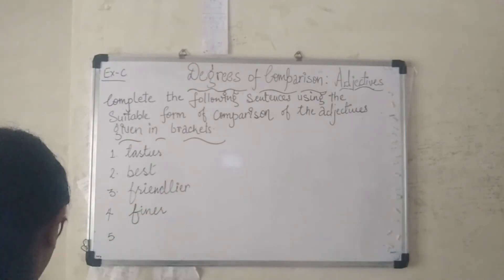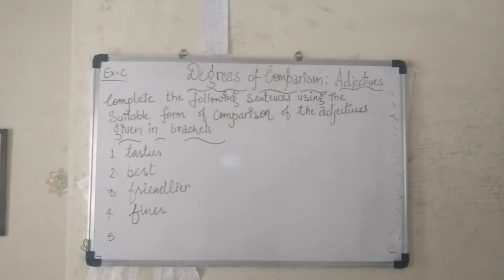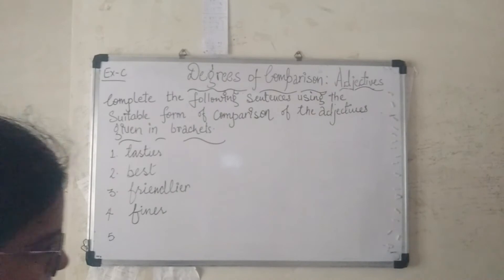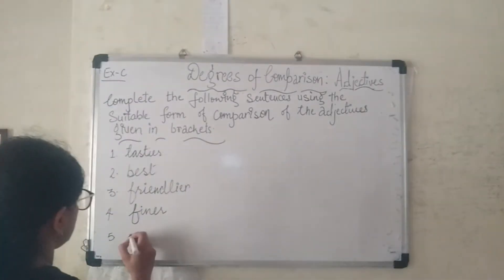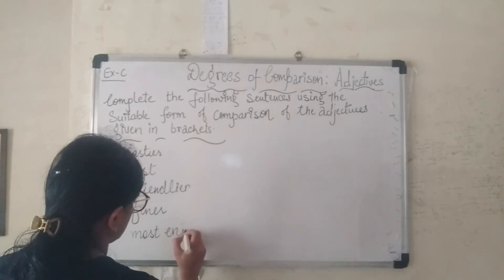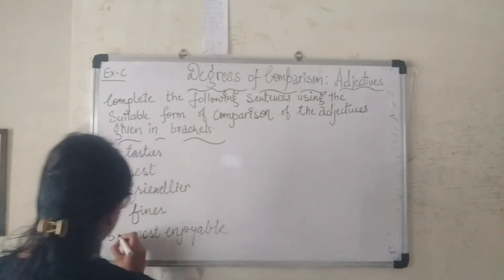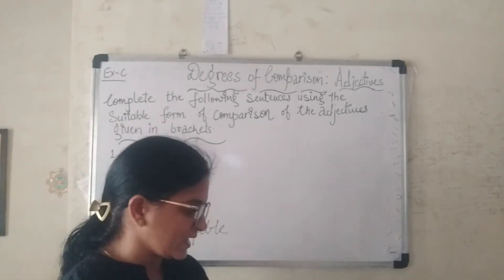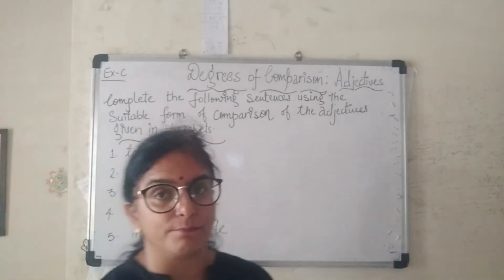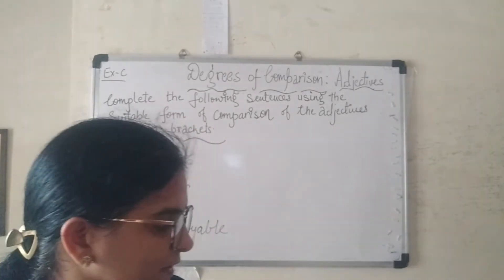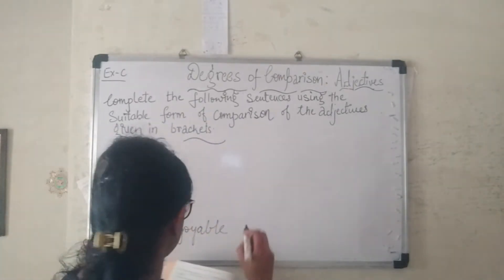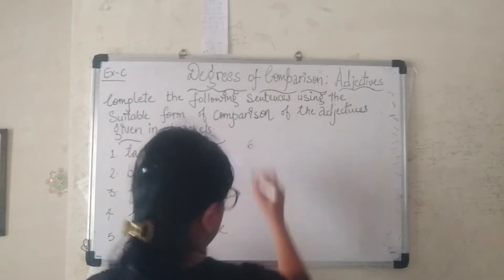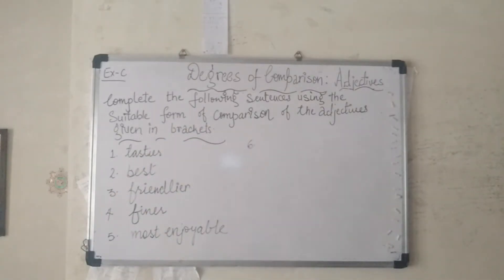Sentence 5: 'Our trip to Andamans was the ___ one we have ever had.' The adjective is 'enjoyable' — it has multiple syllables, so the answer is 'the most enjoyable'. Sentence 6: 'Mr. Singh was named the ___ employee of the company.' The adjective is 'dedicated' — with 'the' before the blank, the answer is 'the most dedicated'.